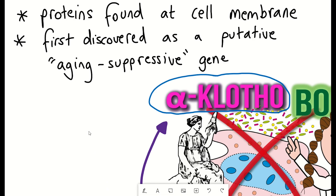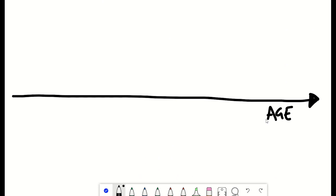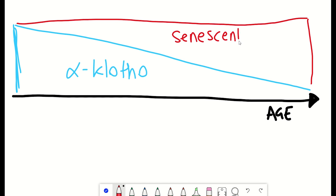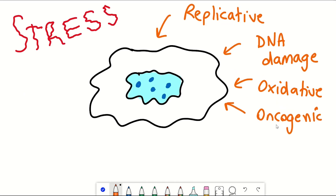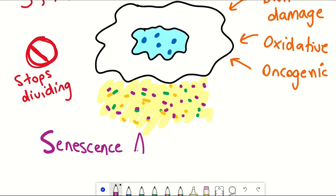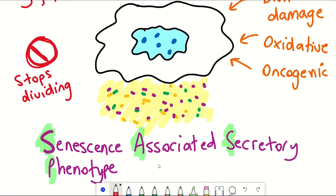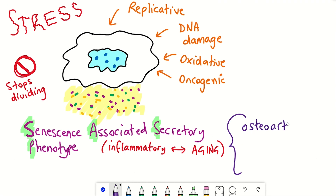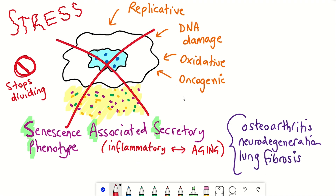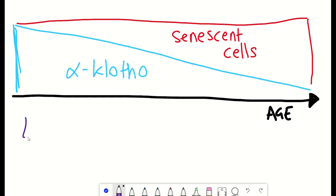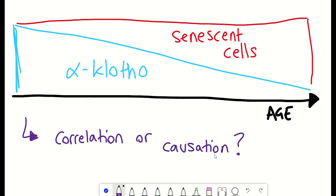It appears that alpha-clotho is an important protein, and studies suggest that alpha-clotho goes down with ageing. As that goes down, something else increases — the presence of senescent cells. Senescent cells are cells that have entered a cell fate whereby they no longer divide and develop the potential to secrete a variety of factors into the external environment, referred to as the senescence-associated secretory phenotype, or SASP. These include many different factors, some of which are inflammatory. Whilst their chronic presence could contribute to continued inflammation and has been linked to different diseases, senescent cells aren't all bad — they are useful in wound healing, development, and as a tumour-suppressive mechanism. But just because there is a correlation between alpha-clotho levels and senescent cell abundance, it doesn't prove causation.